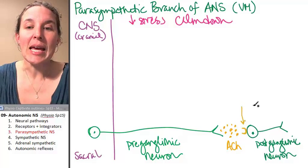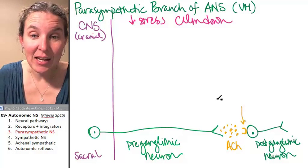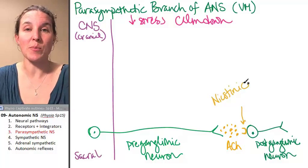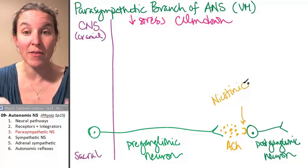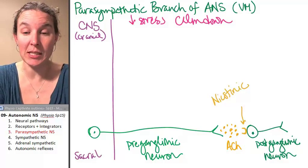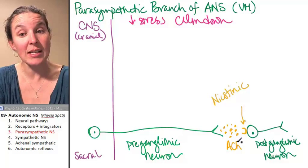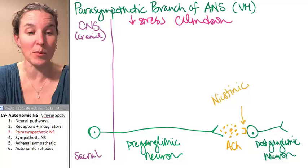Guess what? The postganglionic neuron contains nicotinic acetylcholine receptors. That's the specific flavor of receptor that we have there. And it's, I say always, I'm sure there are some exceptions, but if we're talking parasympathetic, then our first synapse is going to be flooded with acetylcholine and met with nicotinic receptors.